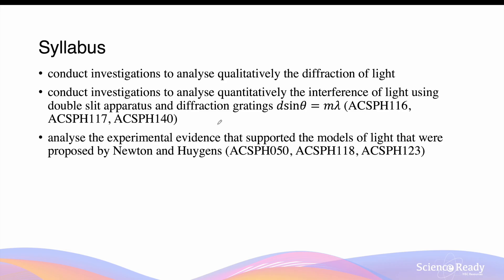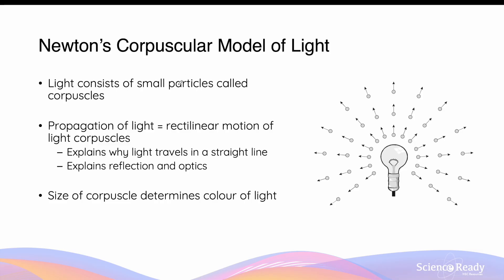Hello everybody. This video is on Newton's and Huygens' model of light. Newton's model of light proposes that light consists of small particles called corpuscles. He suggested that light must be particles in nature because it travels in a straight line, which we call rectilinear motion.